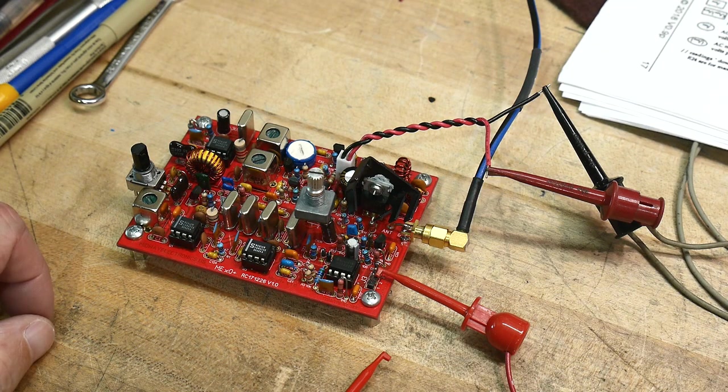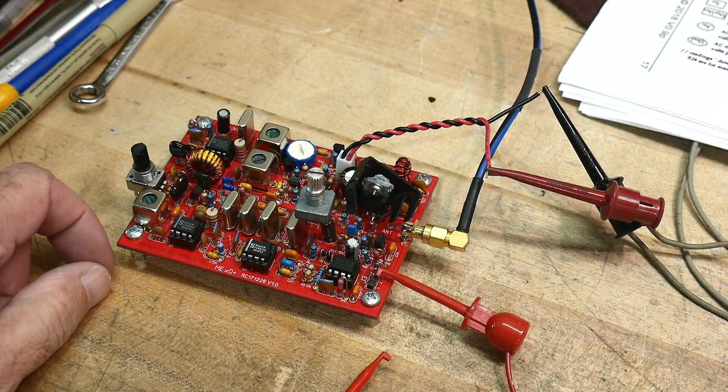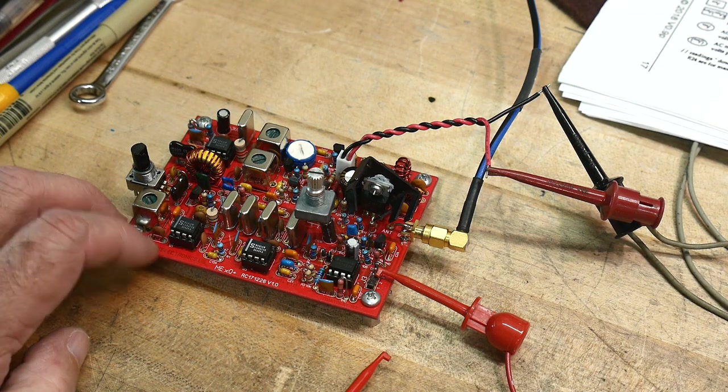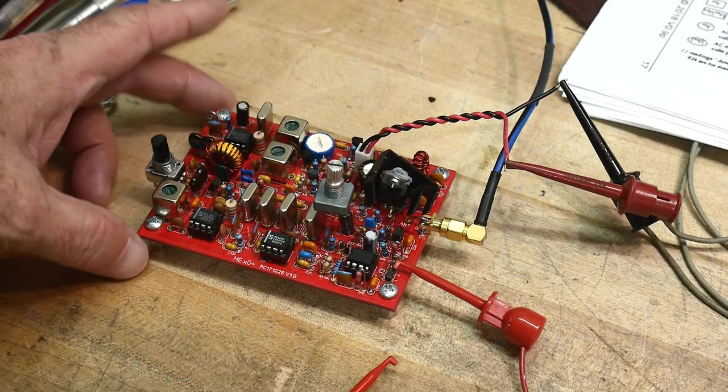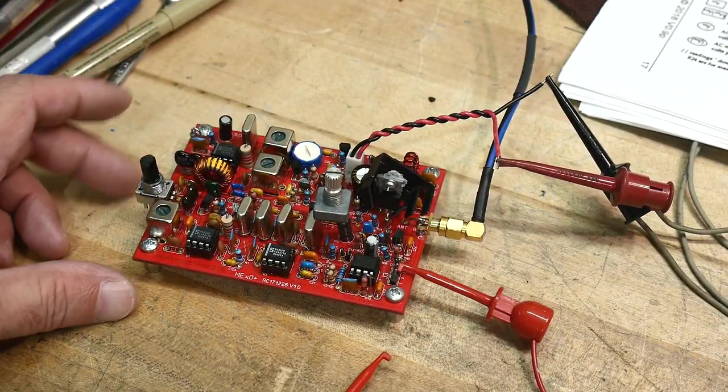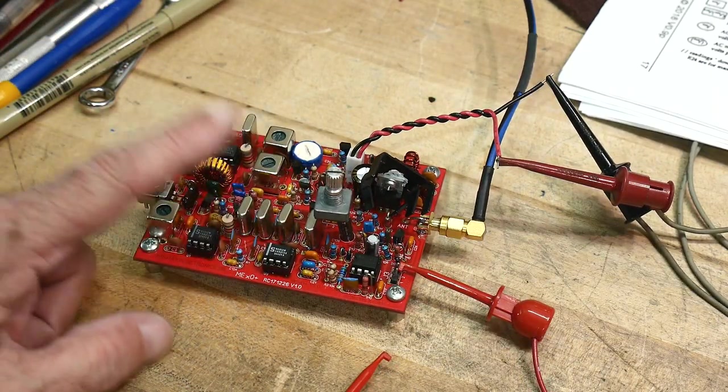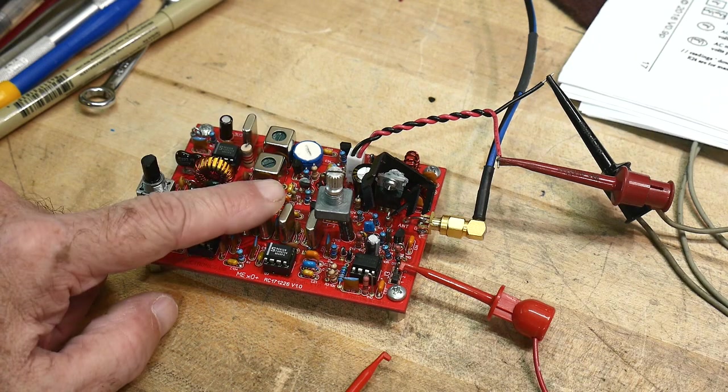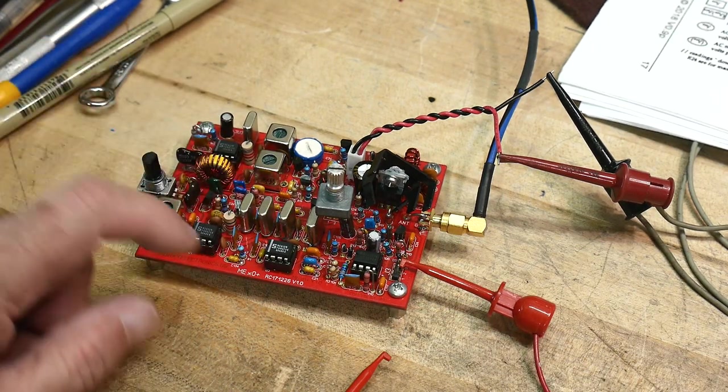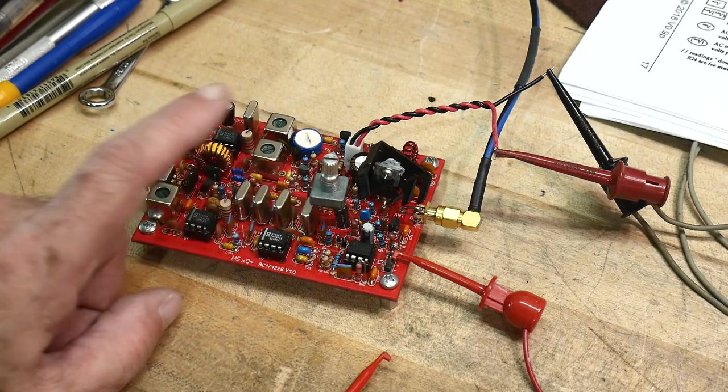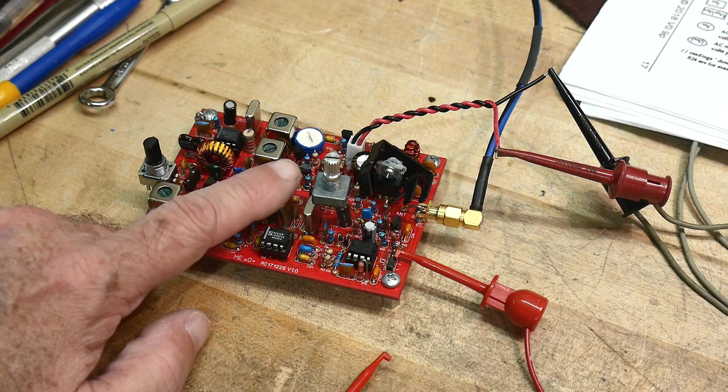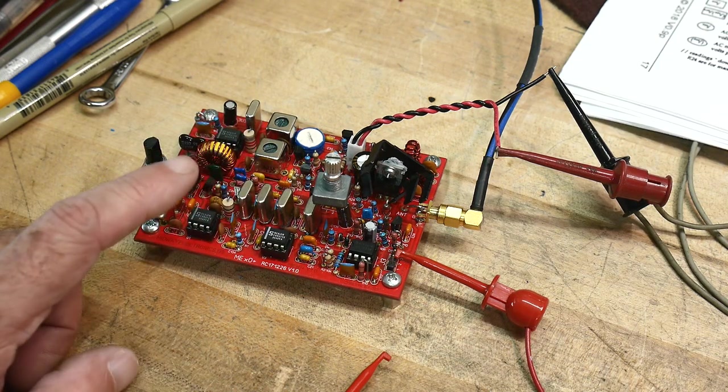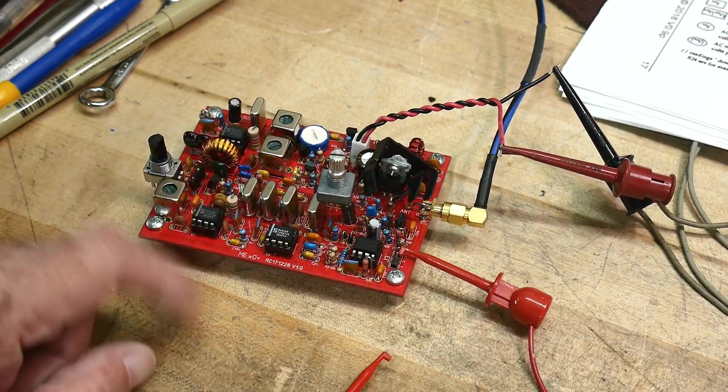Now that I have a nice spectrum analyzer on my bench, I thought I'd pull out some old projects. This is a project that I never quite completed. If you've ever seen one of these, it is a 40 meter, 7 megahertz transceiver, CW only. A lot of these little boards are direct conversion, but this one is actually a superheterodyne, so I'll explain what that is in a minute.